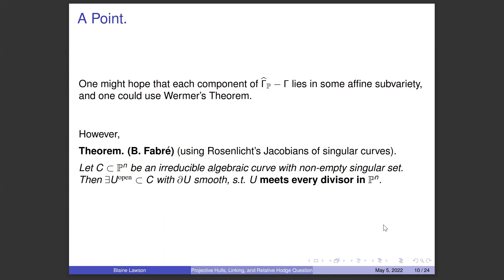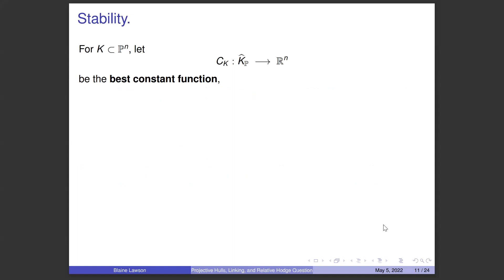There was a theorem of Bruno Fabri, using Max Rosenlake's Jacobians of singular curves — a PhD thesis written here at Harvard — which says: suppose you have an irreducible algebraic curve that is singular with non-trivial singular set. Then there exists an open set in this curve with smooth boundary such that it meets every divisor in P^n, meaning it's not contained in any affine open. So the problem is a little more complicated than one might think.